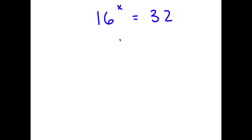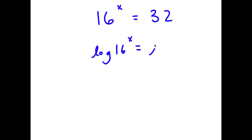In this problem I have 16 to the power of x is equal to 32. So to solve this, I actually have multiple different methods. For my first method, I'm going to take the log on both sides. So I have log 16 to the power of x is equal to log 32.